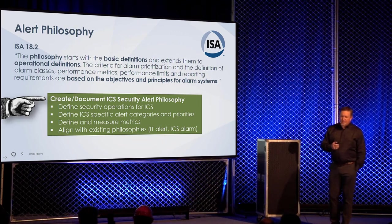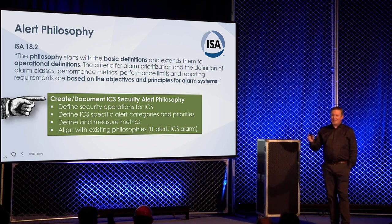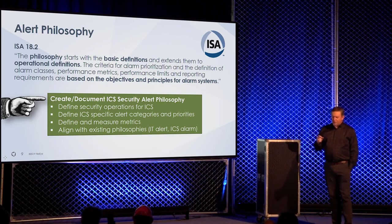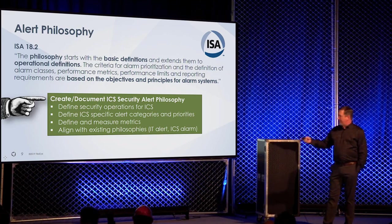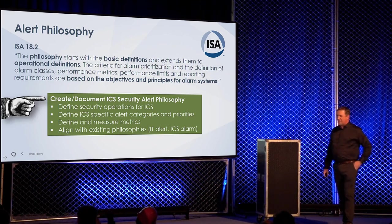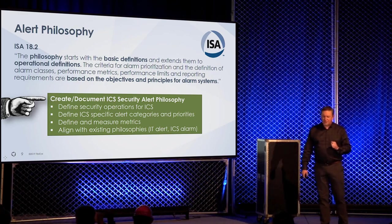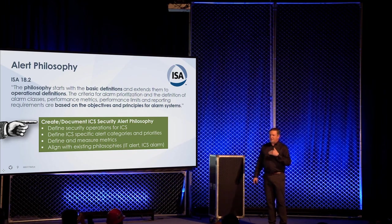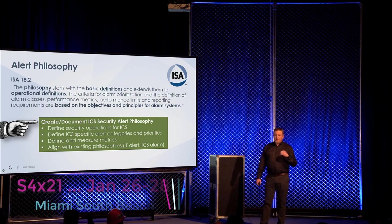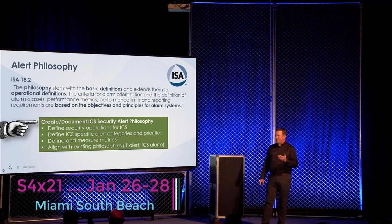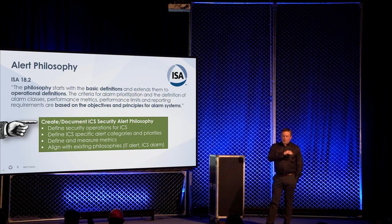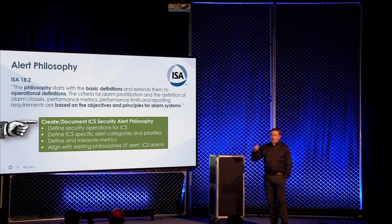So this alert philosophy — you have to define your basic definitions and tie them to your operational definitions, based on the objectives and principles for alarm systems. Create a document for your ICS security alert philosophy. Define your security operations for your control system. Define specific alert categories and priorities. Define and measure metrics — you can't manage what you don't measure. Align these existing philosophies between your IT alerts and your ICS alarms.